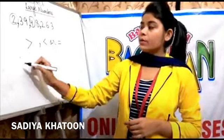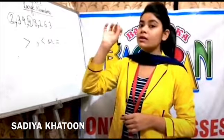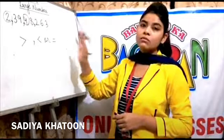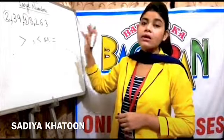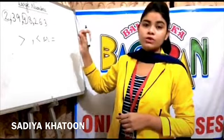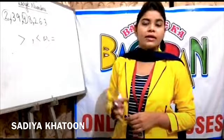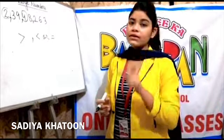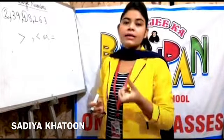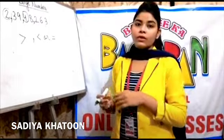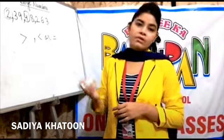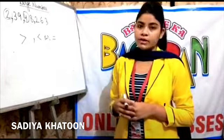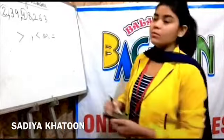Ascending order is when you put the smallest number first and keep increasing, with the greatest number at last. Descending order is just the reverse — put the greatest number first and end with the smallest. That covers ascending and descending order. The next topic is Roman numbers.